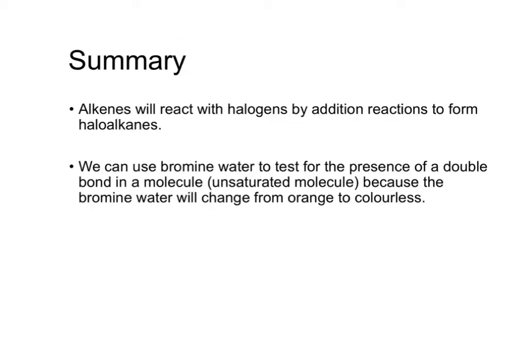So just to summarize then, the alkenes will react with halogens by addition reactions to form haloalkanes. And those haloalkanes always, at the beginning of their name, will have di. And the di means two. So both of the halogen atoms. So for example, dichloro, dibromo, and then whatever the number of carbons is. So ethane, propane, et cetera, et cetera.